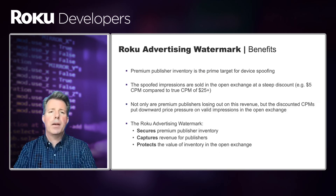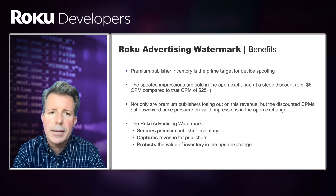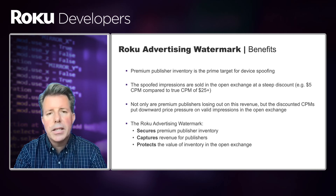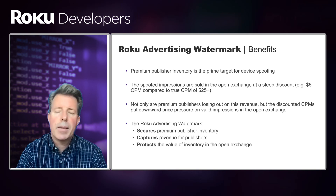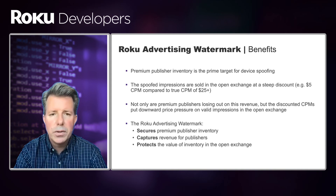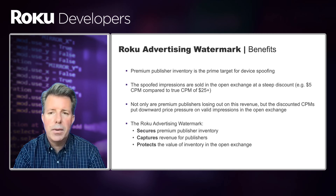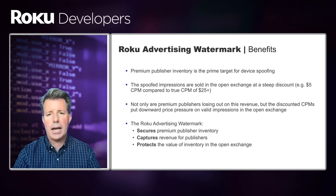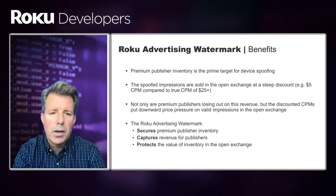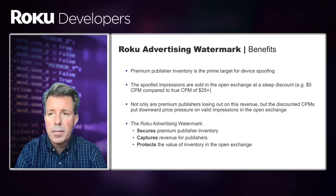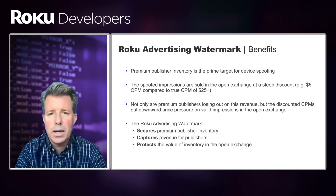What are the more specific benefits to publishers? Premium publisher inventory is the prime target for device spoofing. The spoofed impressions are typically sold in the open exchange at a steep discount — say, at a $5 CPM compared to a true CPM of $25 or more. Not only are premium publishers losing out on this revenue, but the discounted CPMs put downward price pressure on valid impressions in the open exchange. The Roku advertising watermark benefits publishers in three ways: it secures premium publisher inventory, captures revenue for publishers, and protects the value of their inventory in the open exchange.